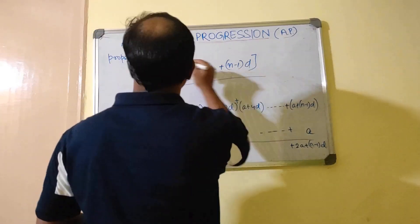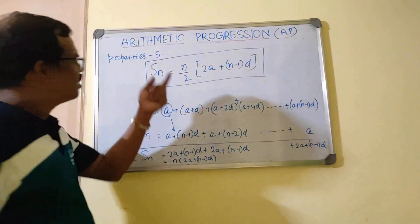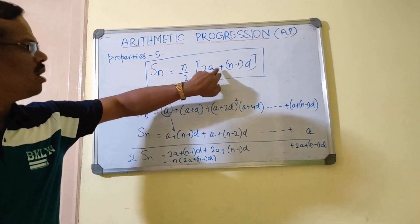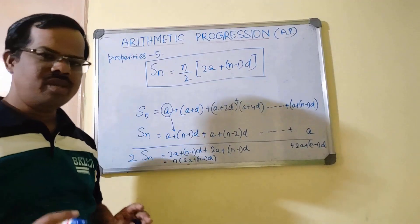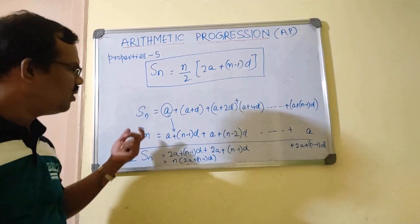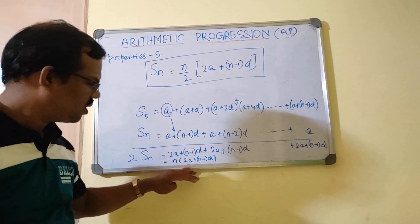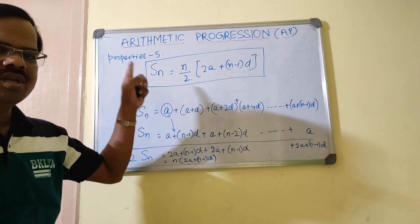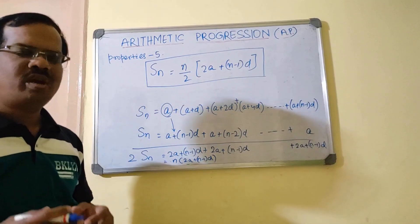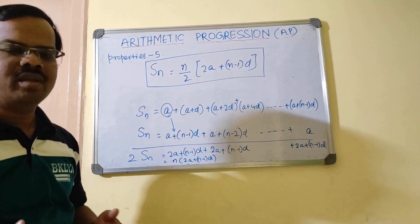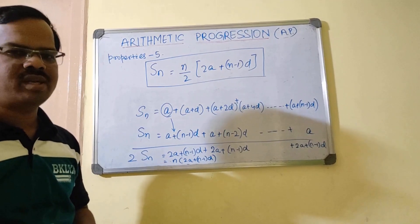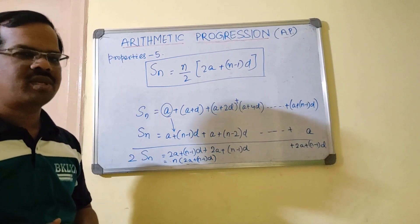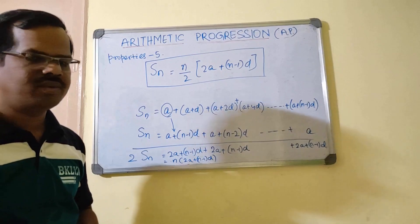This you should remember — it is very easy. S-n equals n by 2 into (2a plus (n minus 1) into d). We derived this and figured out the equation for finding the summation. I hope this has helped you. We will see in the next session more practice sets and other theories in arithmetic progression — there are very interesting concepts. We will learn about them in the next session. Thank you.